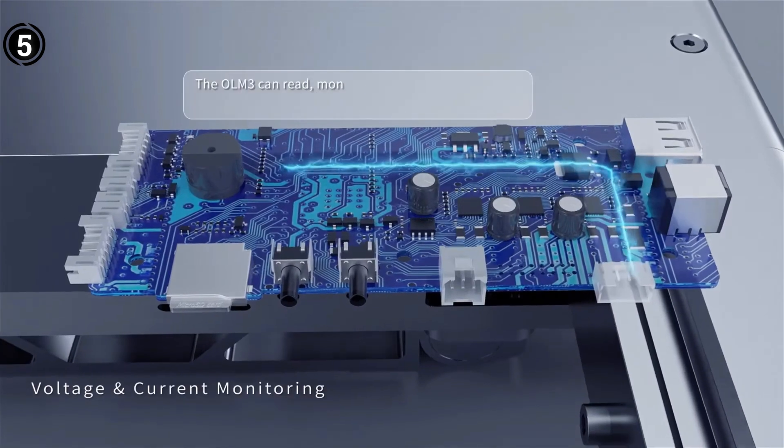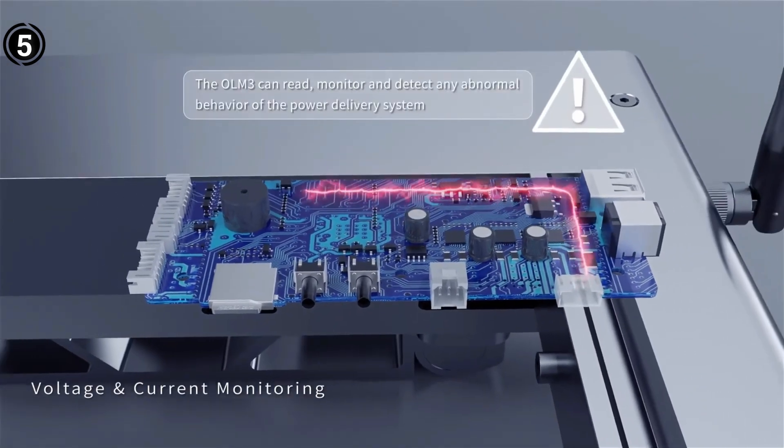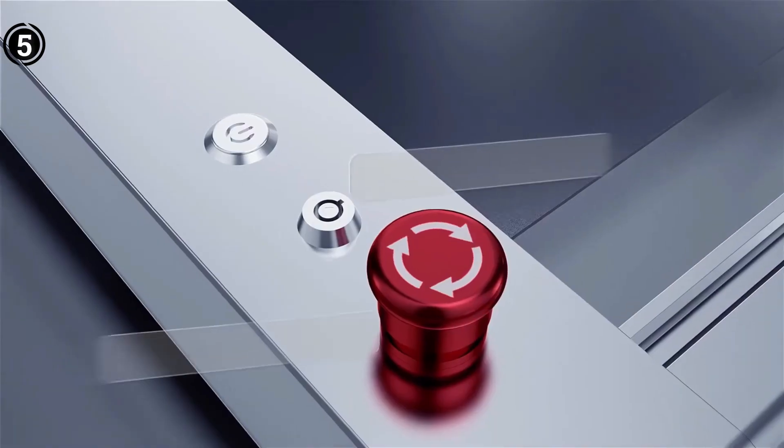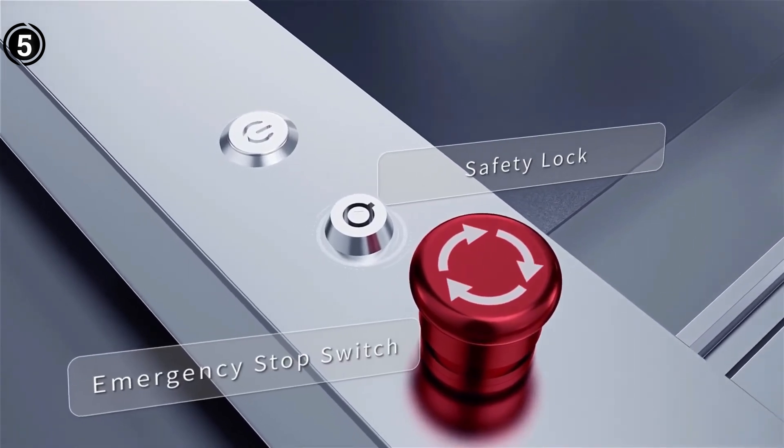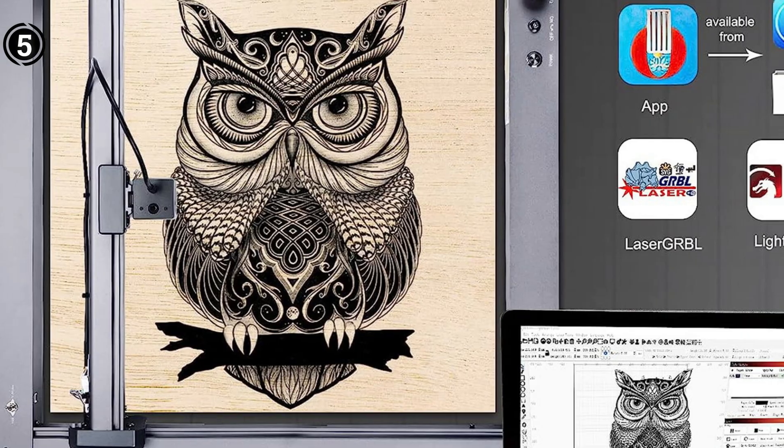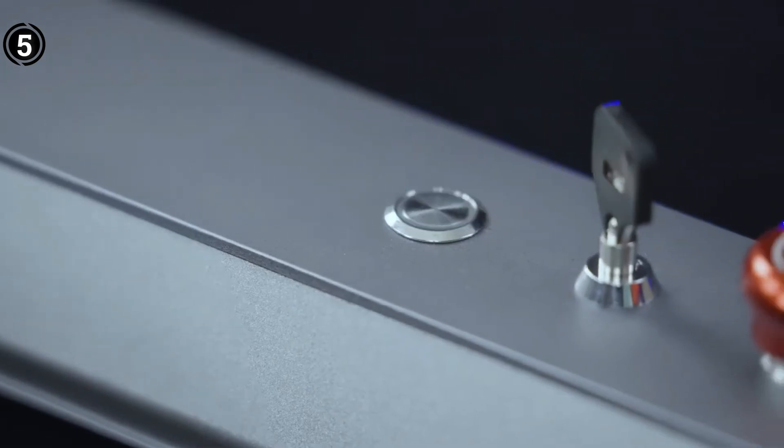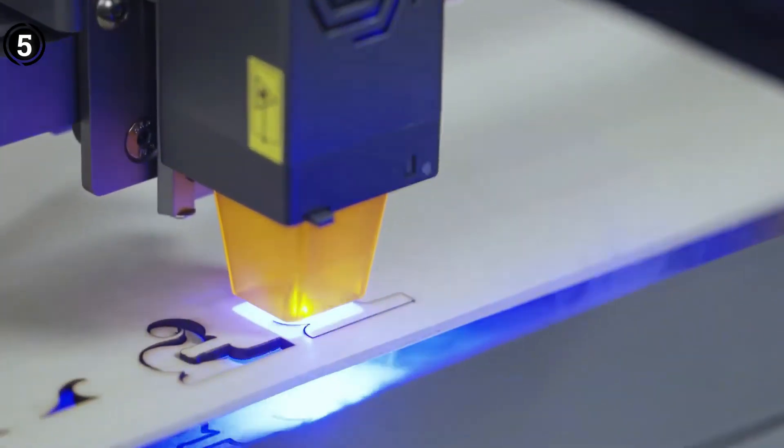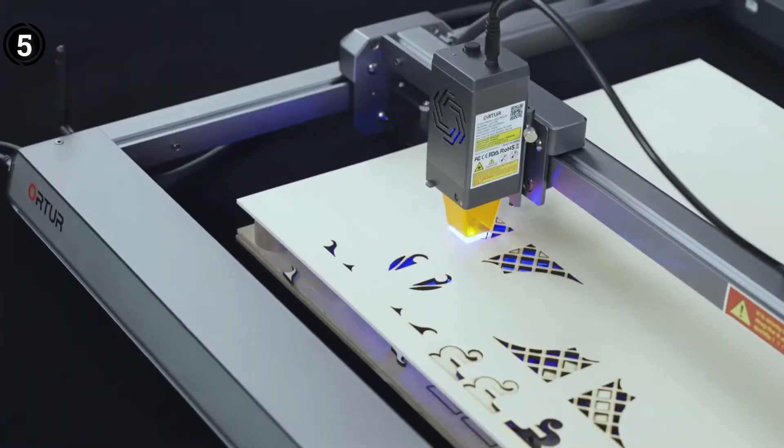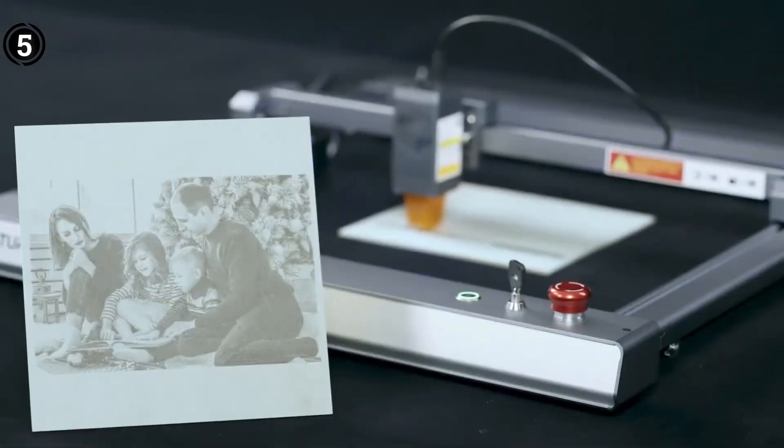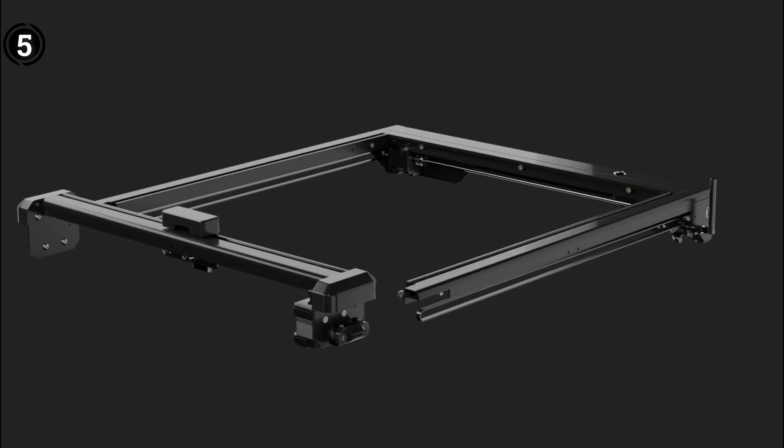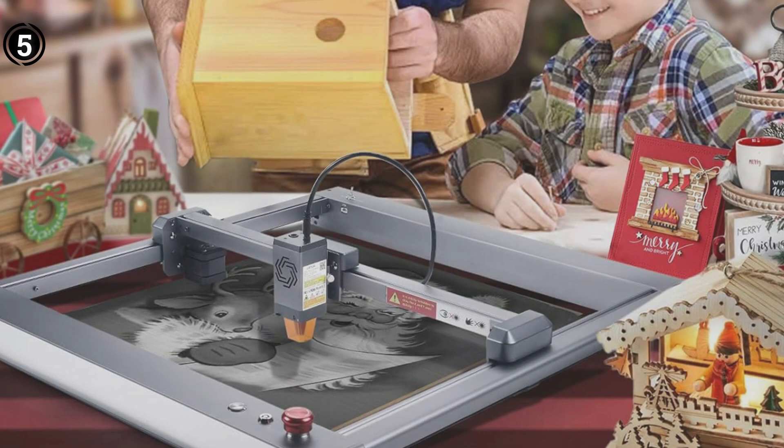One of the standout features is its powerful 10W Laser Module. It's capable of handling tasks that would challenge other machines, such as cutting 12-15mm thick plywood and 12mm thick black acrylic with just one pass. The ability to cut through 30mm thick black acrylic is impressive. The laser's focusing spot area is significantly smaller than ordinary lasers, allowing for precise and fine engraving and cutting.